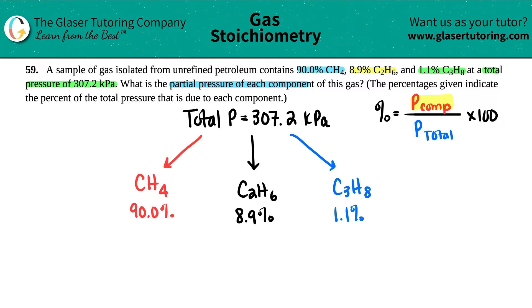So we have 90.0 equals something over something times 100, because that's just the percent formula. We're looking for the pressure of CH4. So you can label this as X, doesn't really matter, divided by the total pressure, which is 307.2.